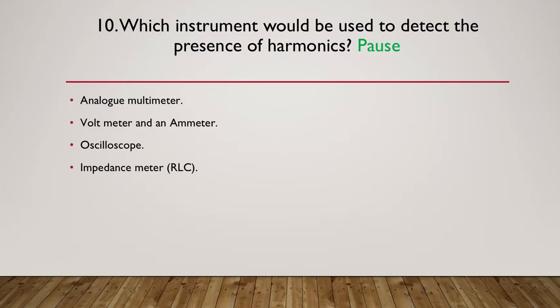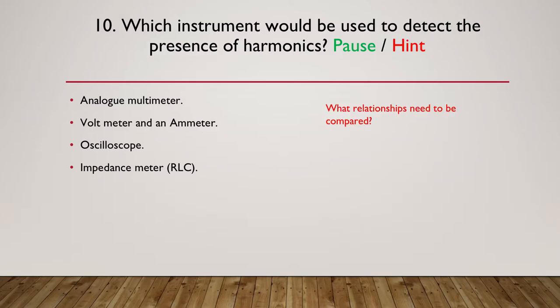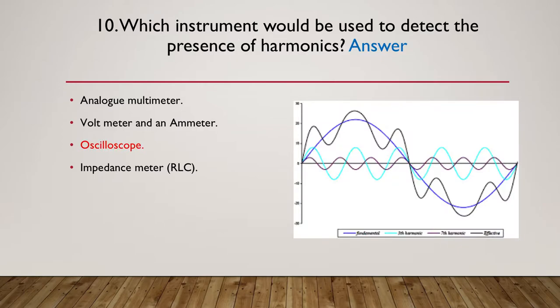Here's the hint: what relationships need to be compared? When looking at harmonics, what are the relationships we're dealing with?